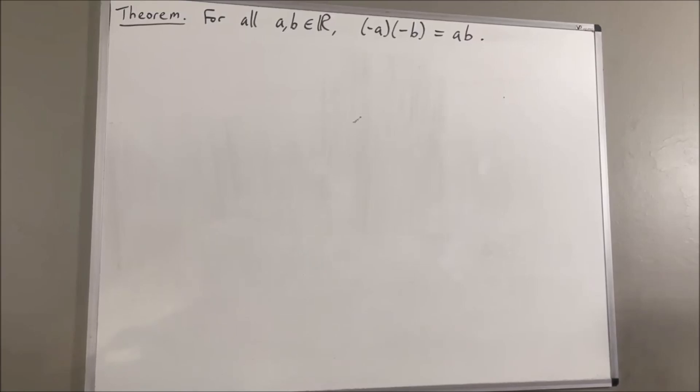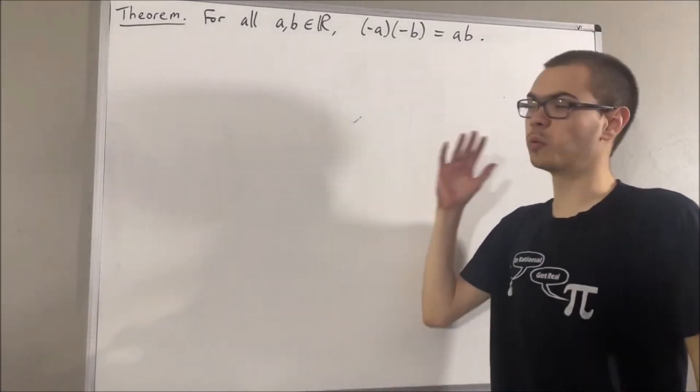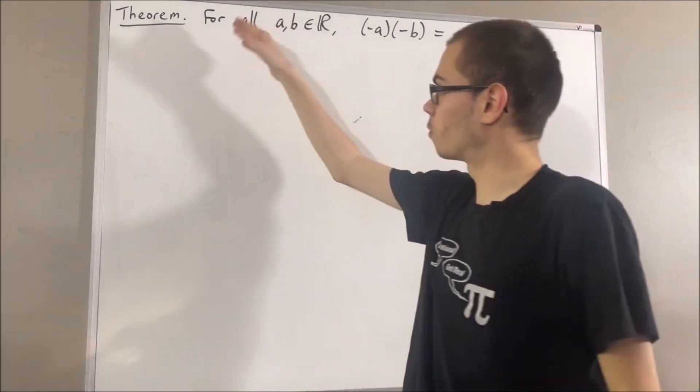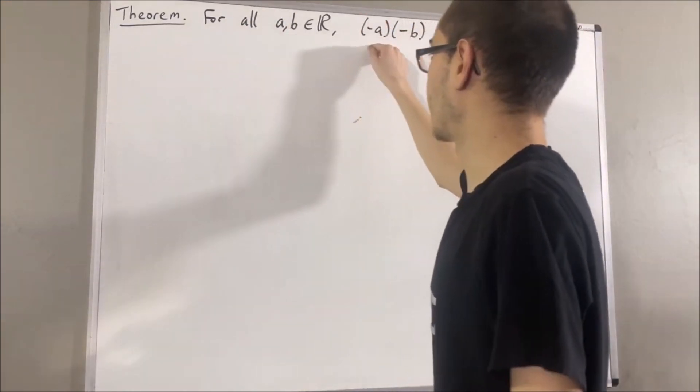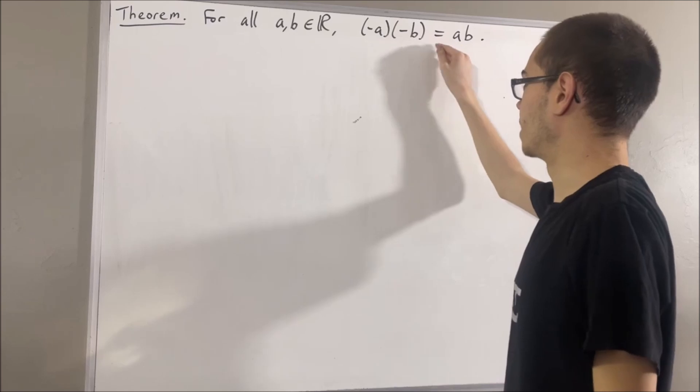Hello! In this video, we are going to prove the following theorem. For all real numbers A and B, the negative of A times the negative of B is equal to AB.